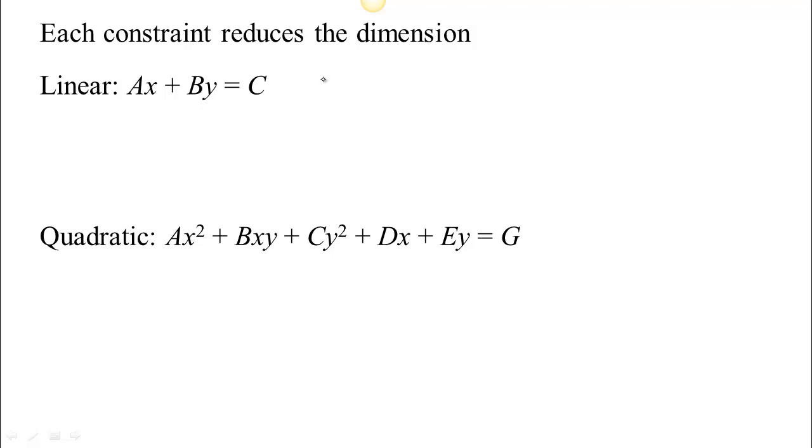First off, each time you put a constraint on there, if you have like two dimensions, you put a constraint on there, so an equation that has to be satisfied, you go from the whole two-dimensional plane to only certain points. Each constraint you put on reduces the dimension by one.